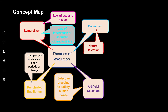Welcome back from the ad break. Now we're going to have a look at Lamarckism specifically. It's a theory proposed by Lamarck, and he put forward two laws: the law of use and disuse, and the law of inheritance of acquired characteristics.